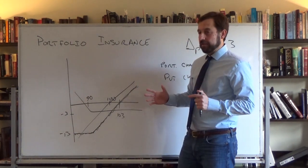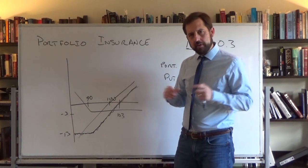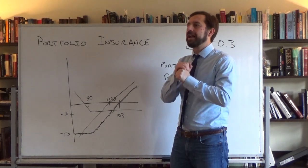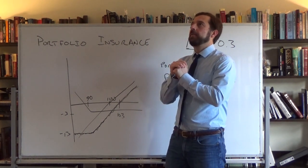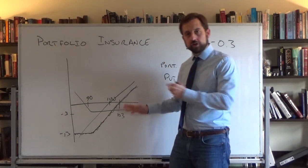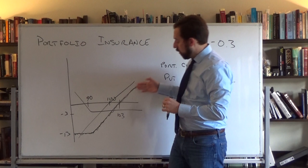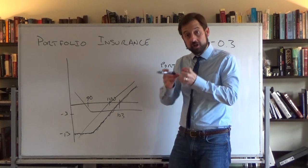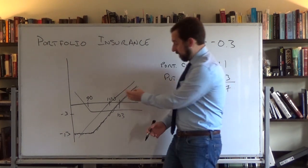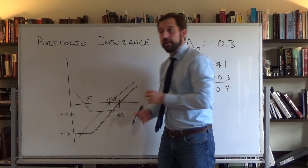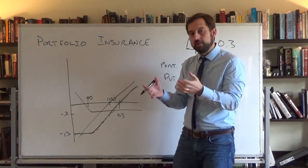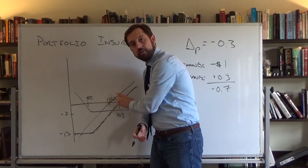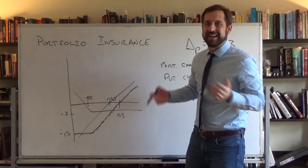The idea of what we're going to do is: if we don't have options, we can't just put on a position which globally creates this protective put. But what we can do is recreate this position locally — in a very small interval around 100. We'll use a dollar as the interval, but in reality you'd want a small interval. We create it locally around 100, and then as the stock moves, we rebalance. That's the dynamic trading strategy.